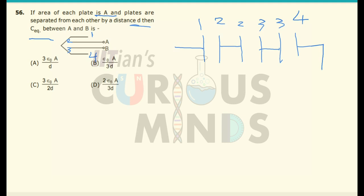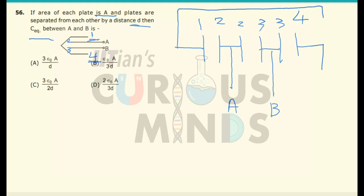Now AB is connected — A is connected to plate 2, so A is connected somewhere over here and B is connected somewhere over here, between plate 3. And the first and the fourth plates are connected, so there is a connection between the first and the fourth plate.